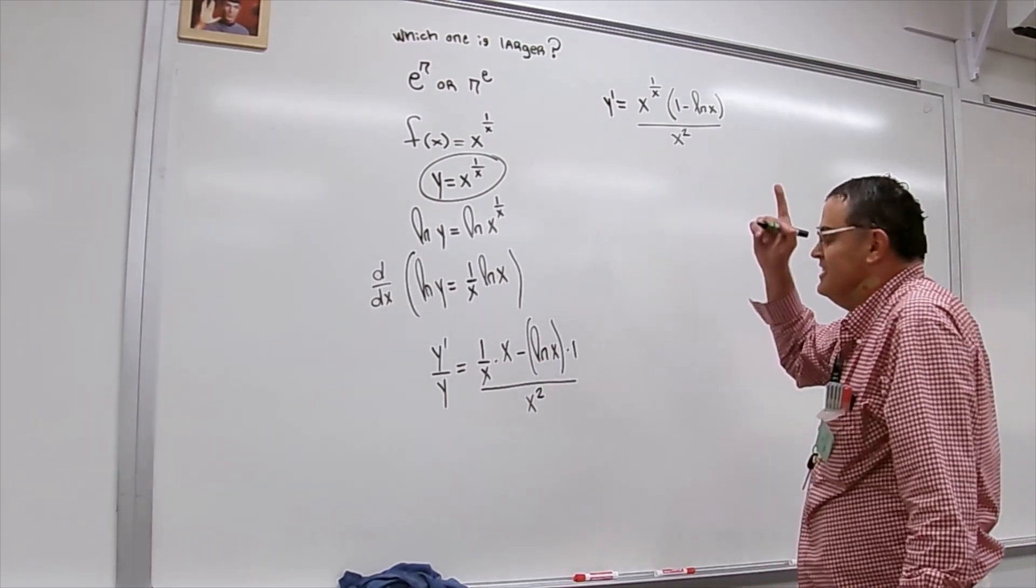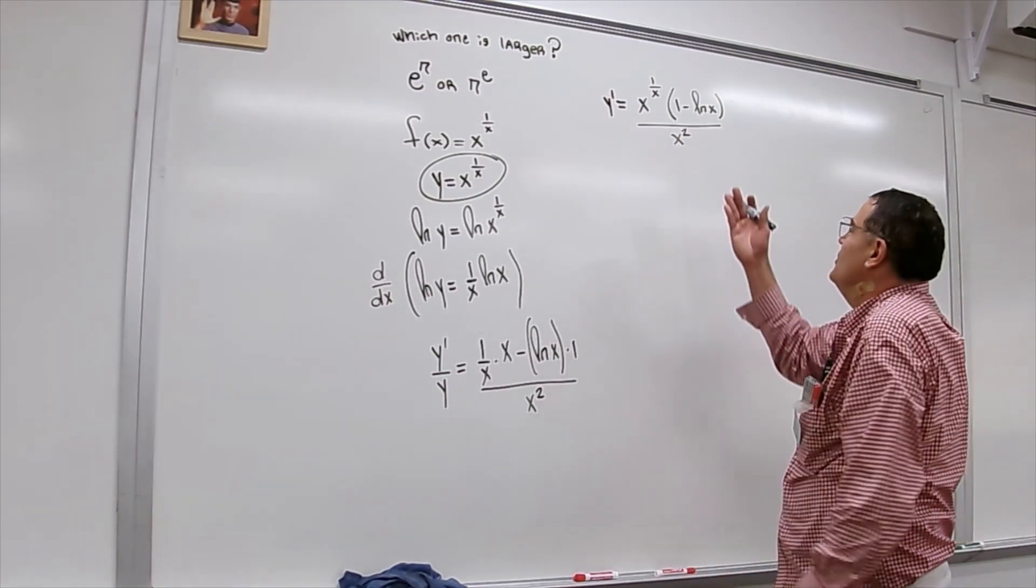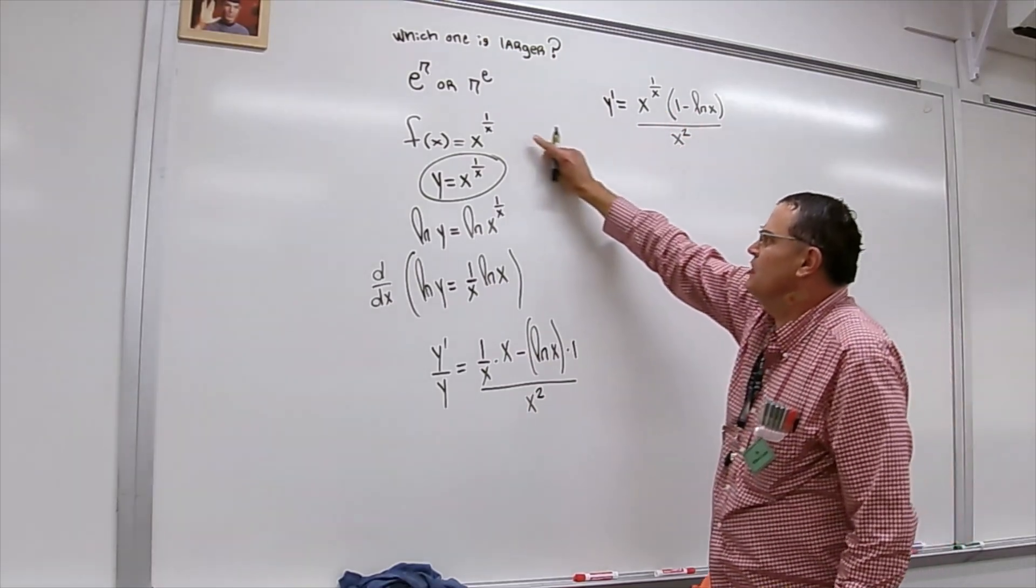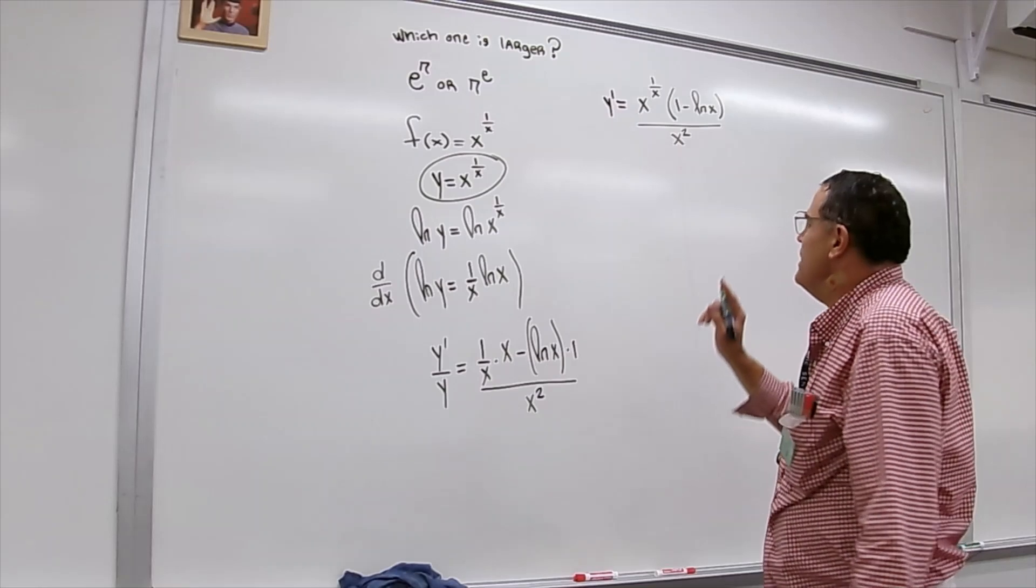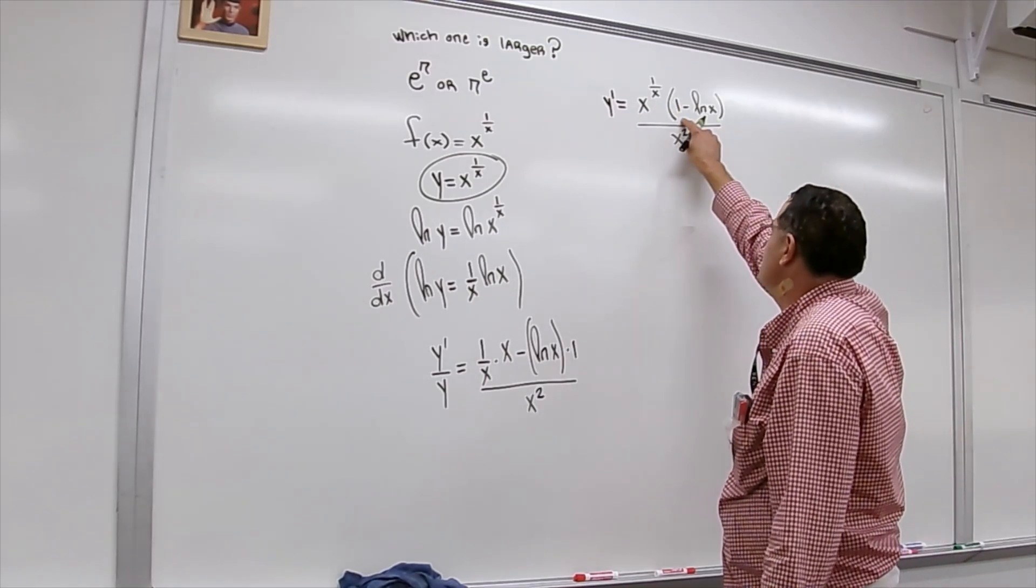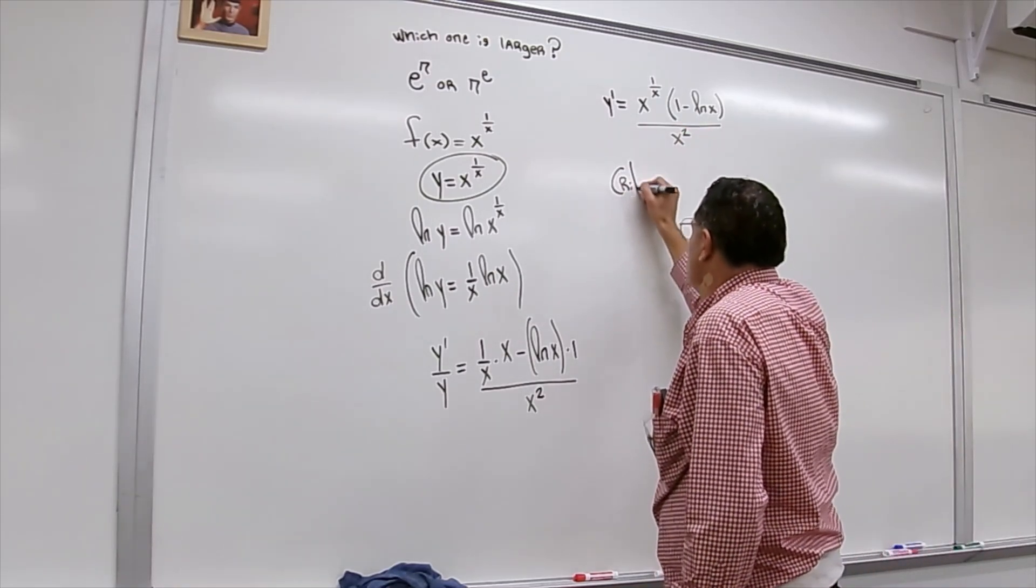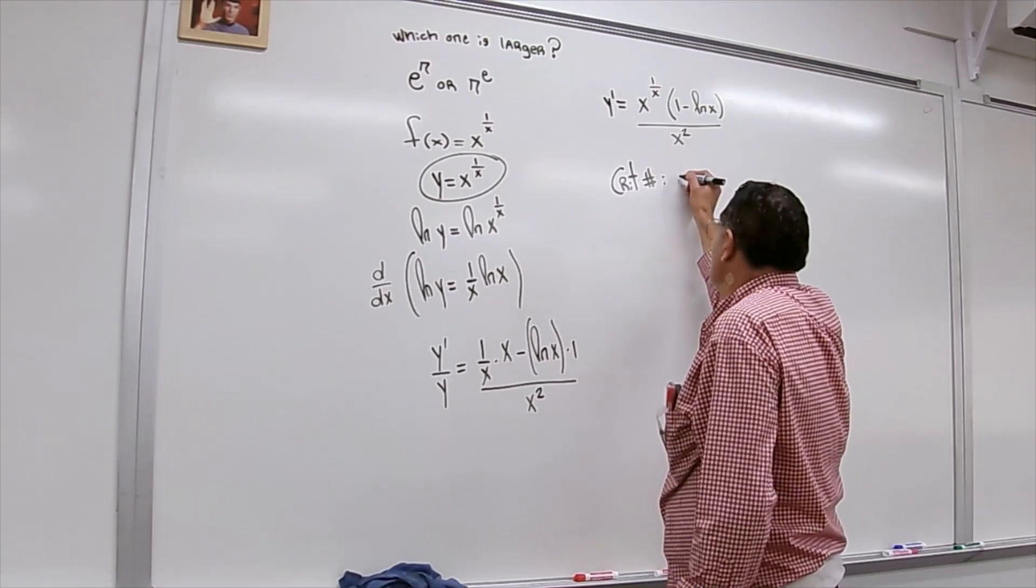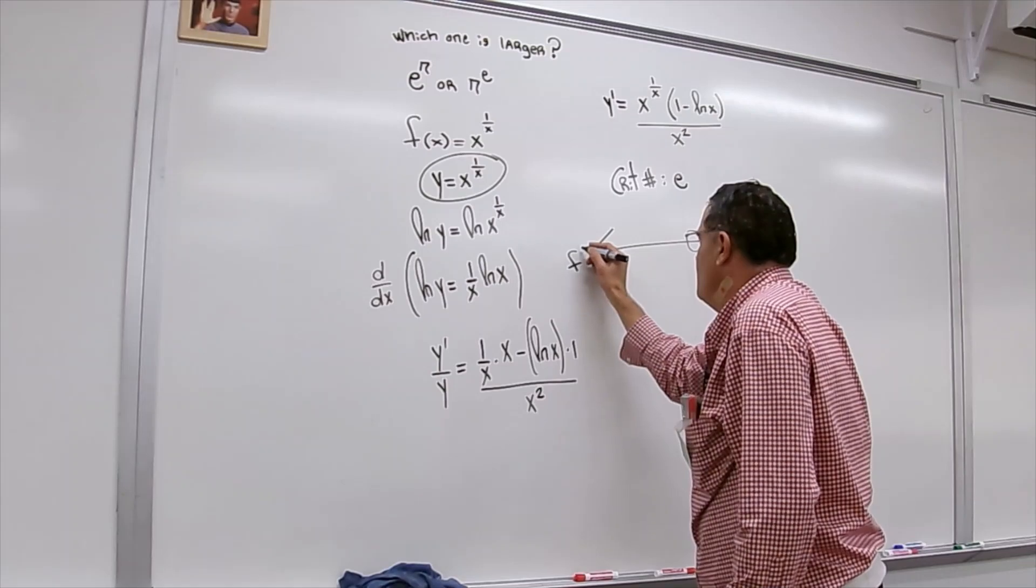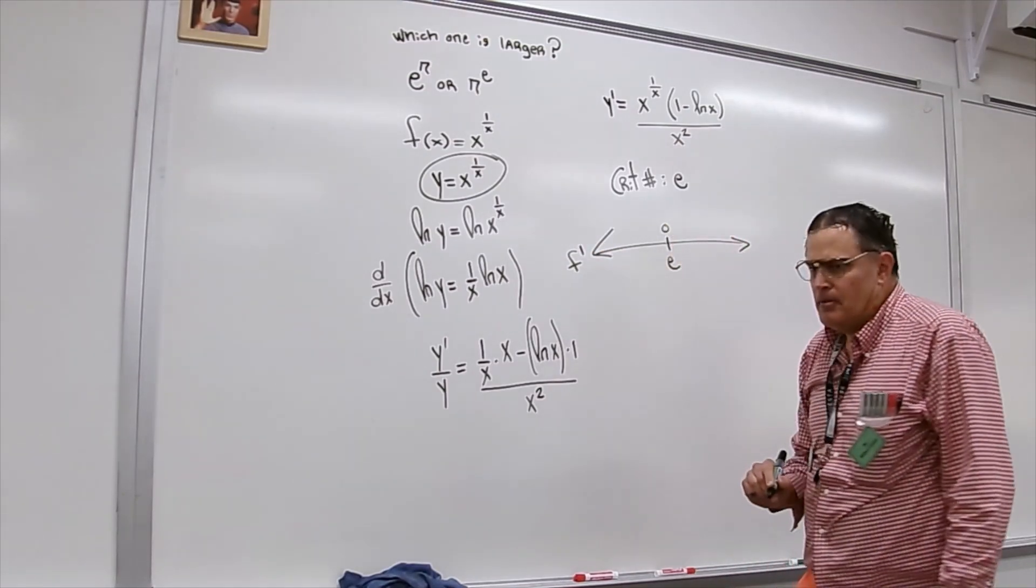I want to find the critical numbers of this function and x equals zero is not a critical number it's not in the domain what about this we're not going to get anything from there but I will get zero on the top if x is e so critical number is e I'm gonna go ahead and draw the slope number line f prime and I'm going to put e on that slope number line and we're going to investigate to the left and to the right.